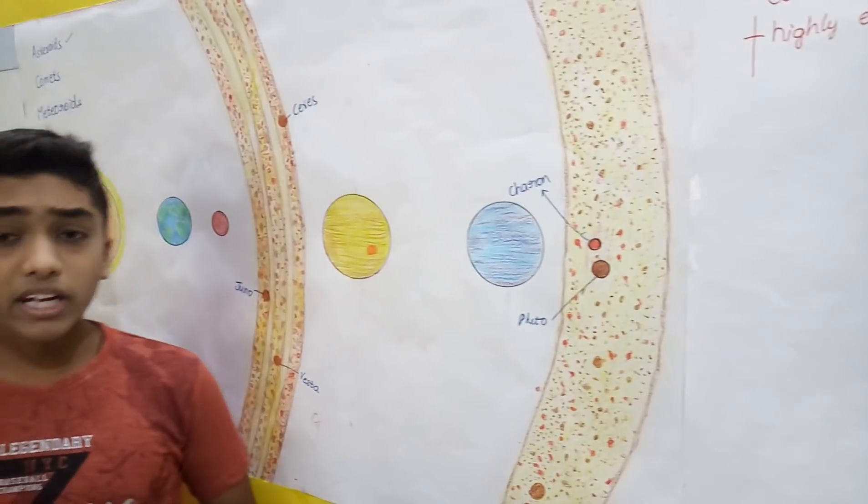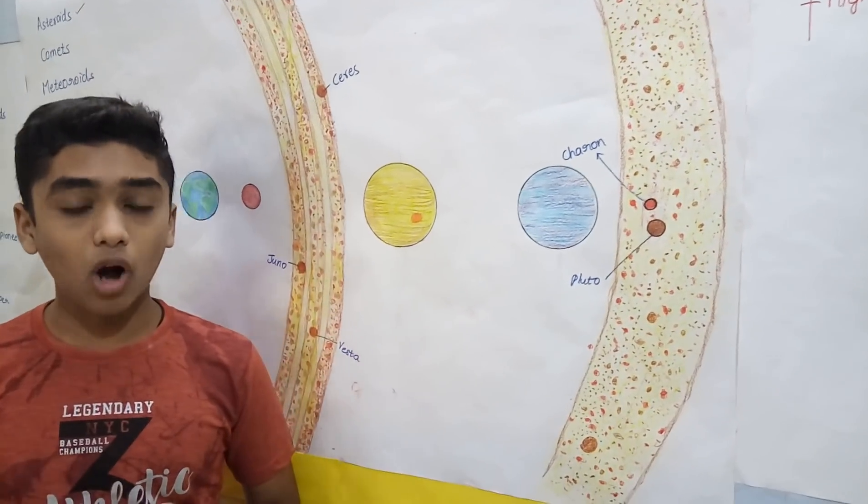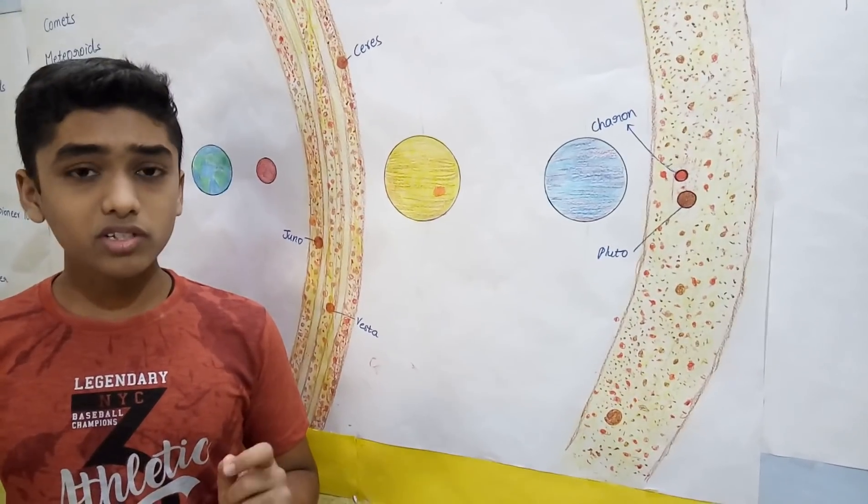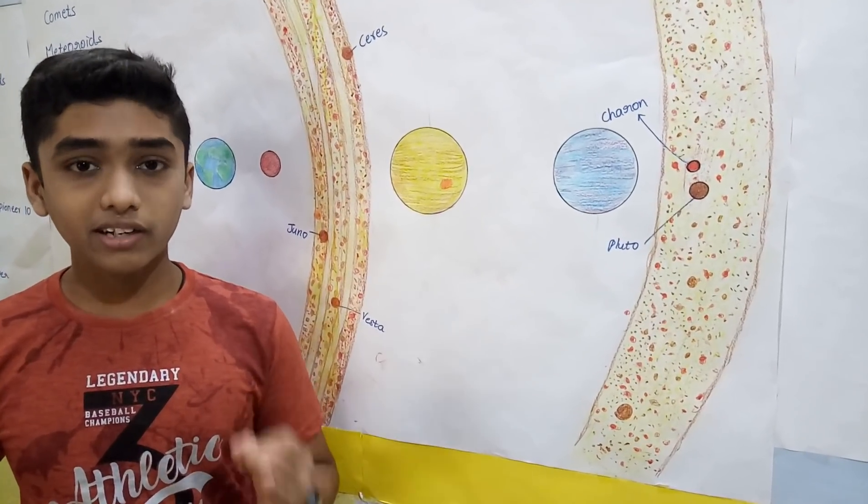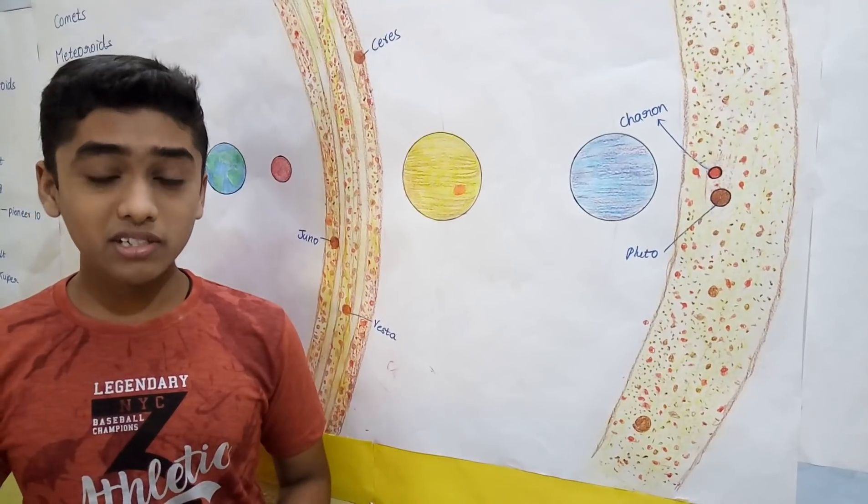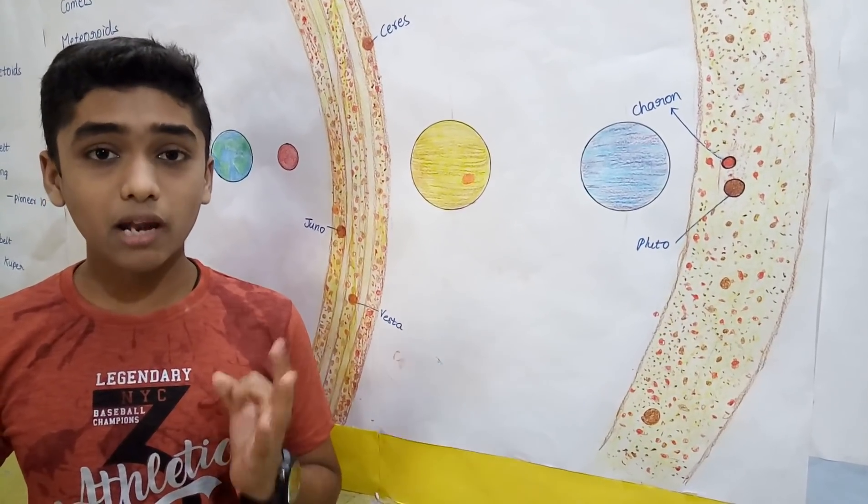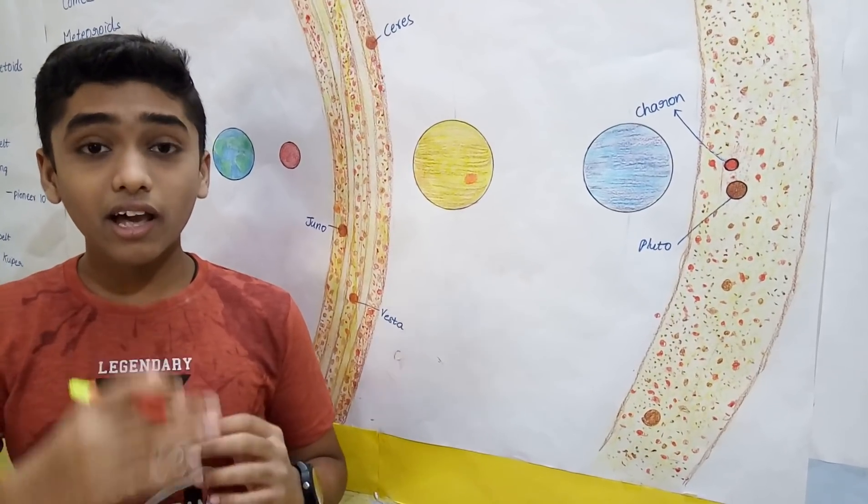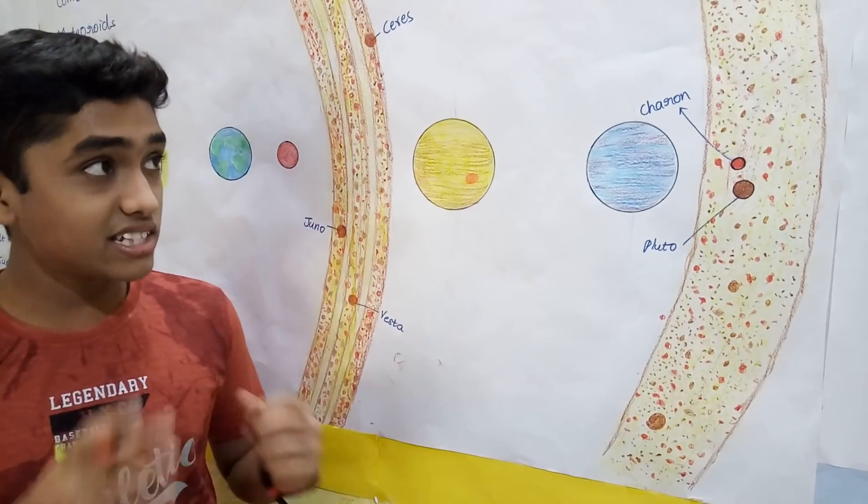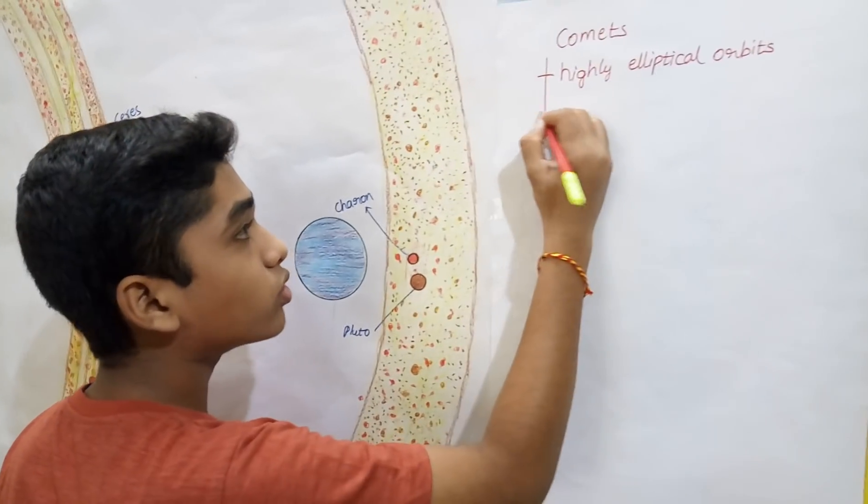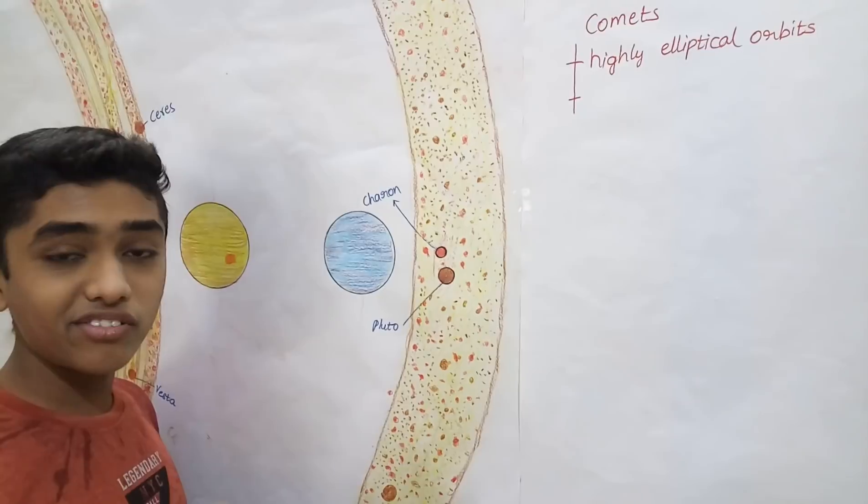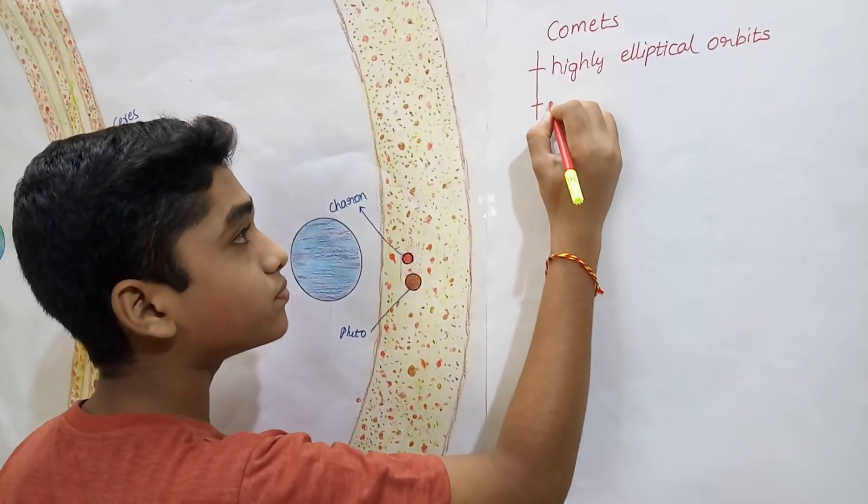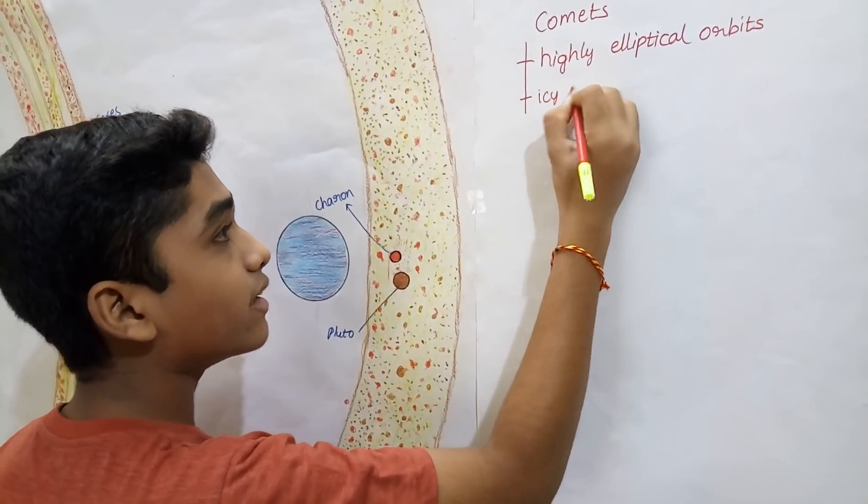The only difference between asteroid and comet: asteroids consist of rock, dust, and metals. Comets also consist of rock, dust, and metal, but these rock, dust, and metal are covered in icy shell, icy layer. So that icy layer is the only difference between asteroids and comets.